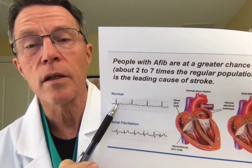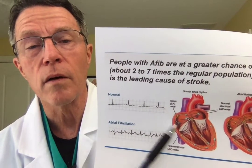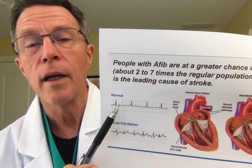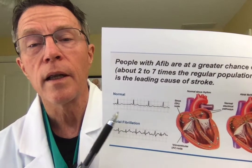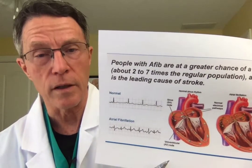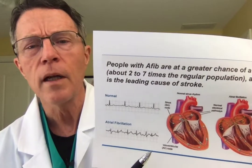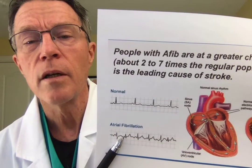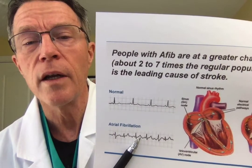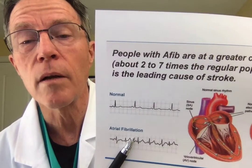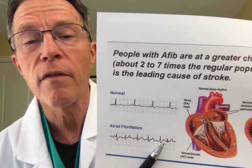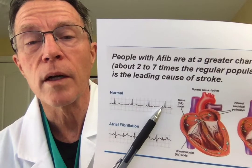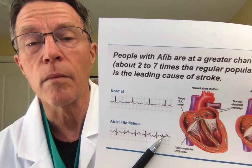There's some delay with the AV node — the atrioventricular node — and then it goes through the ventricles. This large complex is the QRS — that's the conduction going through the ventricles. And then that T wave is where the muscle depolarizes in the ventricles. So if you look at atrial fibrillation, one of the things you see is you really can't find a P wave.